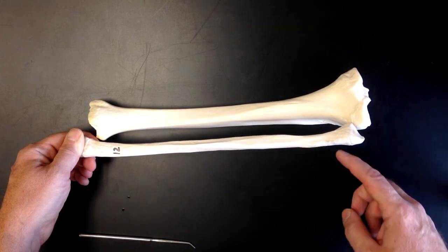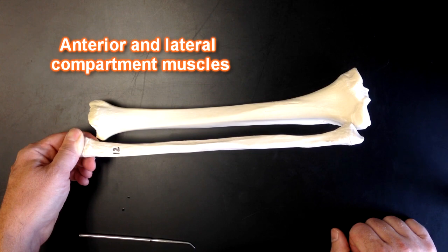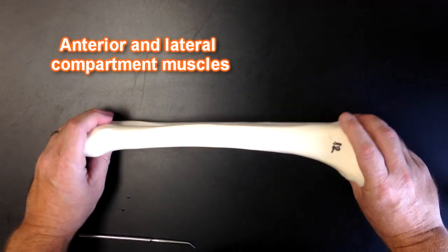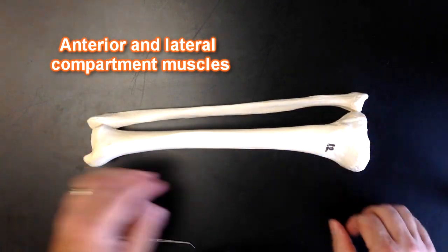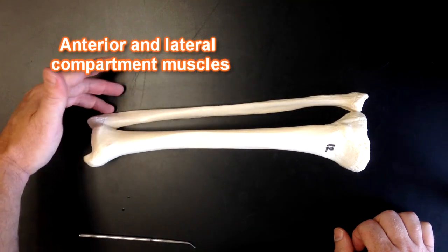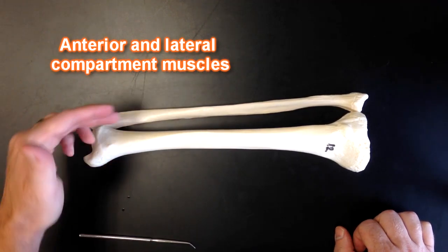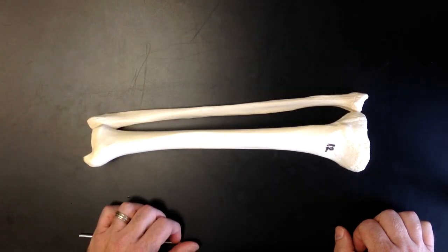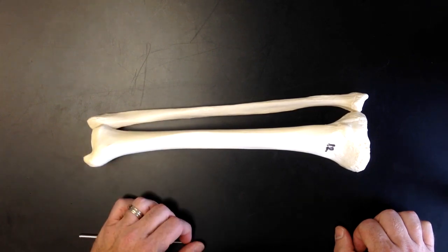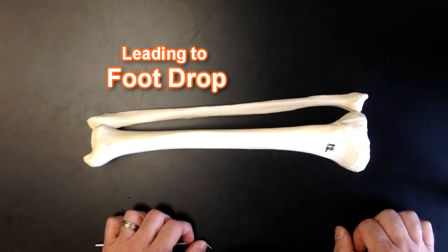Now the muscles that are supplied by that common fibular nerve would be the muscles of the anterior compartment and the lateral compartment. So we're talking about tibialis anterior, extensor digitorum longus, also the fibularis muscles, fibularis longus and brevis, also fibularis tertius, which would be innervated by the deep fibular nerve from the anterior compartment. That would lead to a condition known as foot drop.